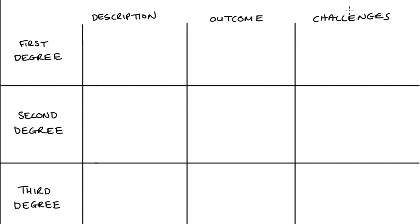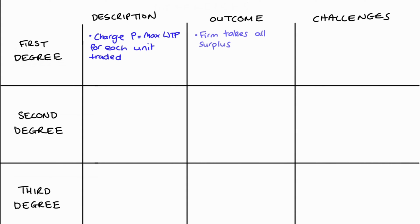Let's start with first degree. Typically we model firms engaging in first degree when they charge the price of a good equal to its maximum willingness to pay, and they do this for every unit that they trade. This means that one of our outcomes is the firm manages to take all of the possible surplus in the market, and related to this there will be no dead weight loss.